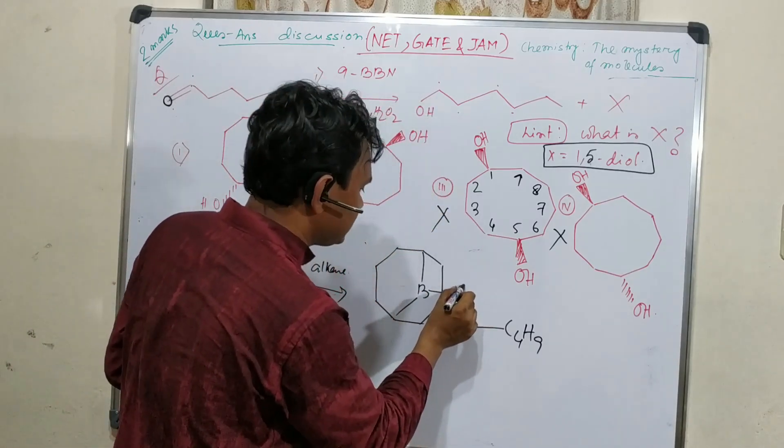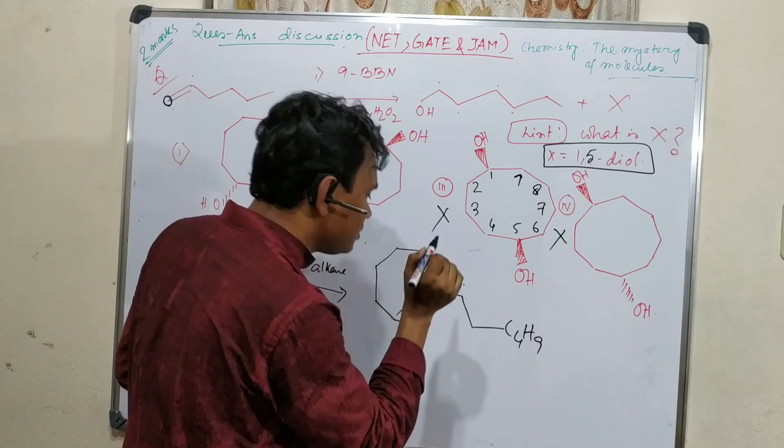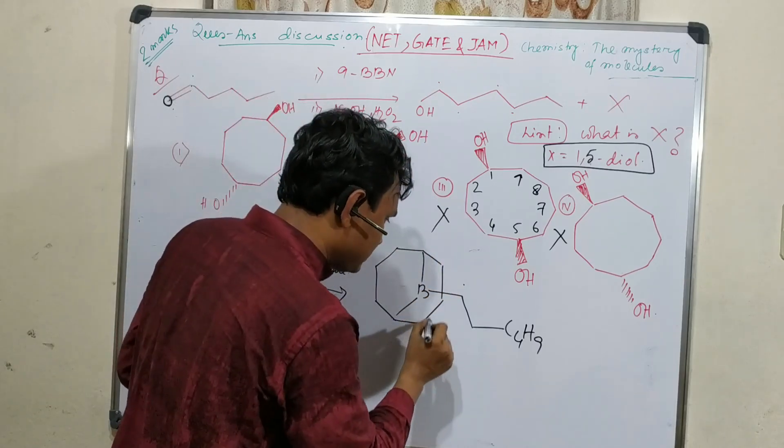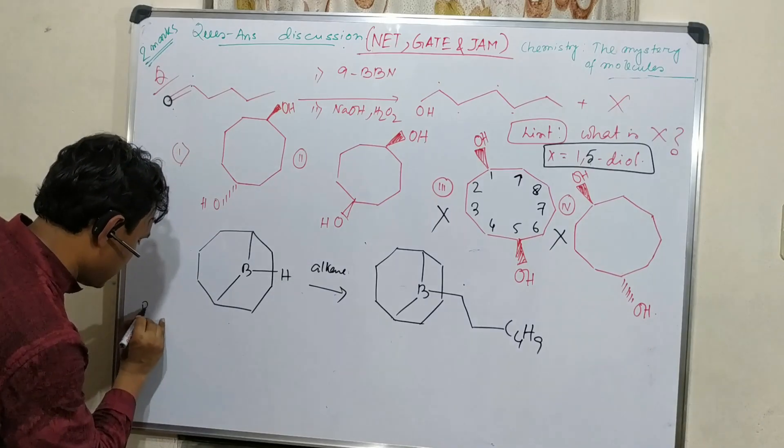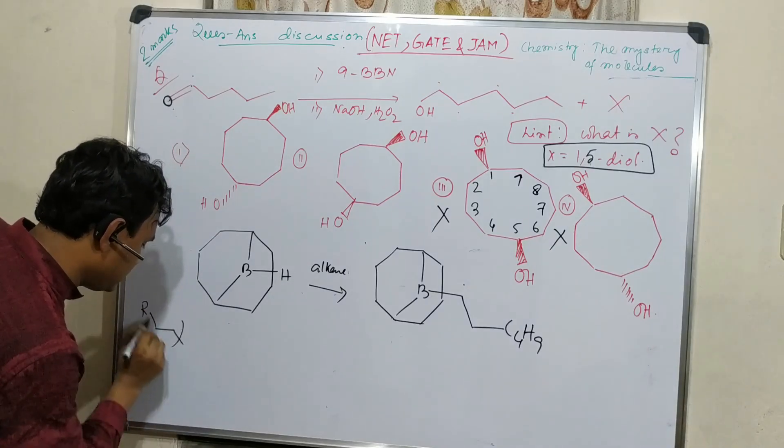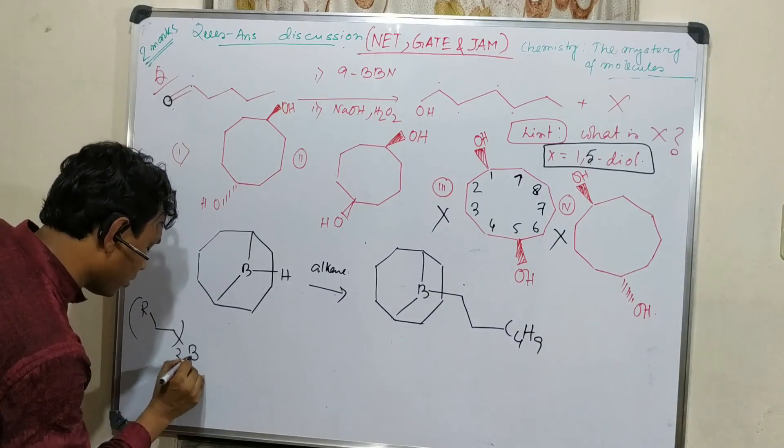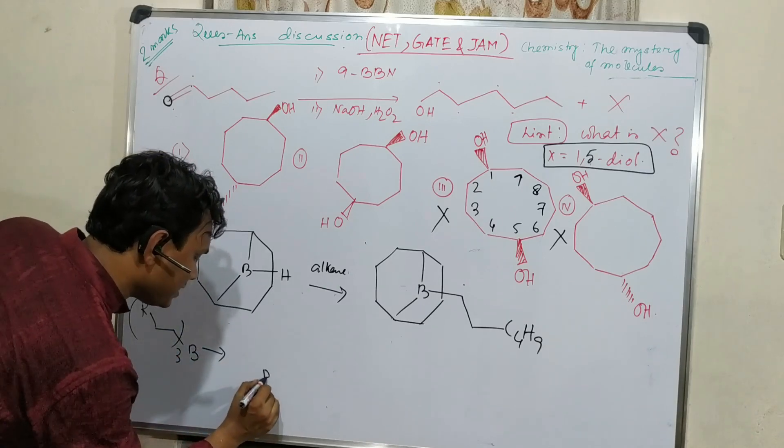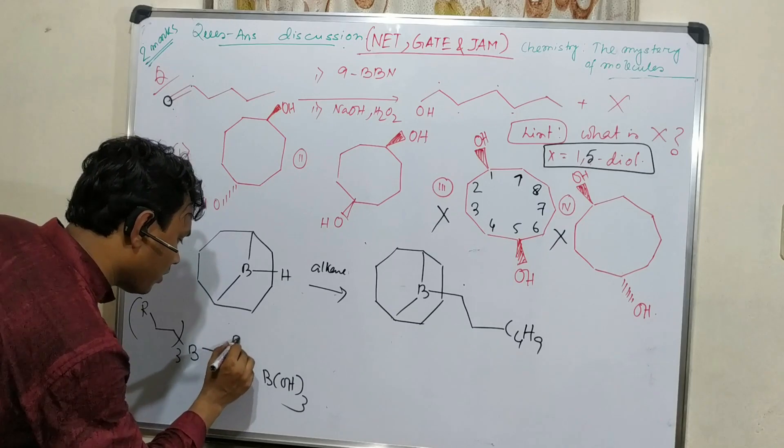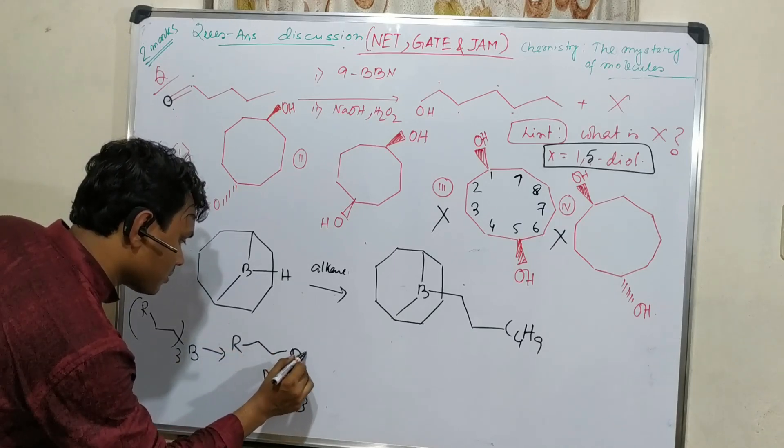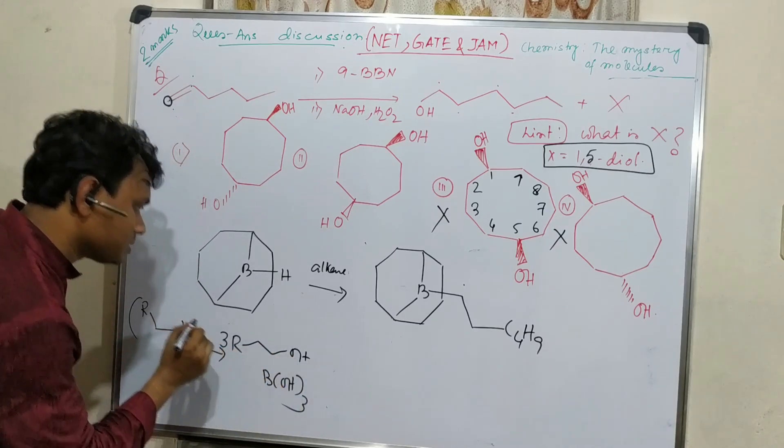Now, hydrolysis will produce alcohol here. And ultimately, this will be boric acid. In the last example, I showed that this trimeric boron produces boric acid.